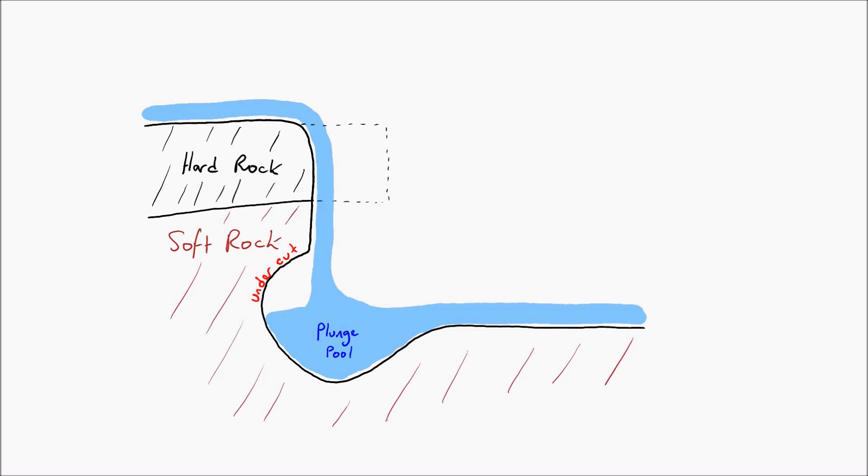It begins to undercut the hard rock, and as you can see, sections of it can drop off. What we say is that the waterfall retreats up river, retreating backwards. In fact, Niagara Falls is retreating about 50 centimeters each year.